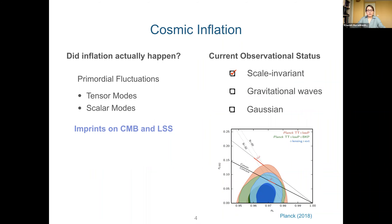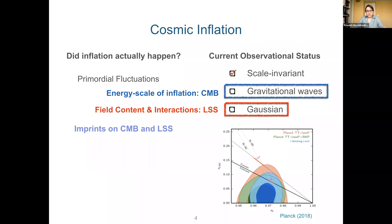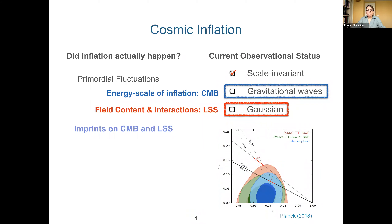From measurements of the three-point function of CMB fluctuations, we also know that the primordial anisotropies have nearly Gaussian statistics. In the years to come, our understanding of the early universe is expected to significantly improve via measurements of gravitational waves, which will tell us about the energy scale of inflation, as well as measurements of deviations from Gaussianity of the initial conditions, which will tell us about the field content and interactions during inflation. While CMB observations are leading the way for the former, large-scale structure observations are expected to play the key role for the latter.